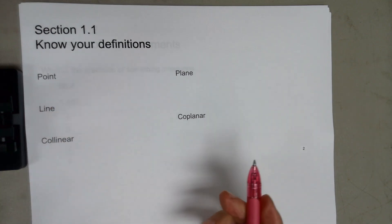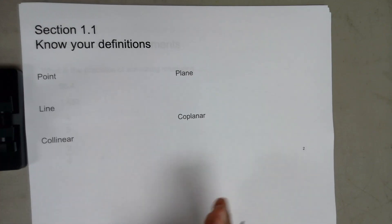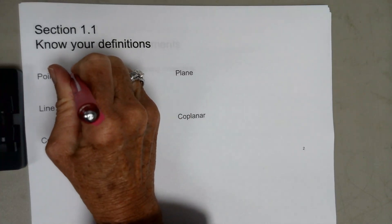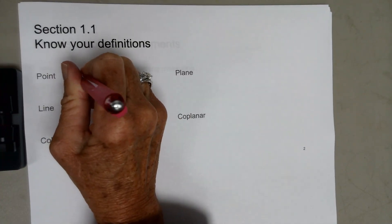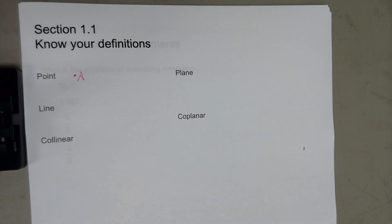A point we would call an exact location in space. To illustrate a point, we would just put a point and put a capital variable, but the definition would be an exact location in space.